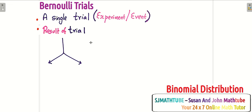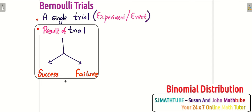We will label one of them as success and the other one as failure. But note this — it has nothing to do with real life success or real life failure. So, Bernoulli trial means a single trial and the result of the experiment will be two outcomes, and the outcomes will be complementing each other. One will be labelled success and the other will be labelled failure, and remember there will be no other possibility.